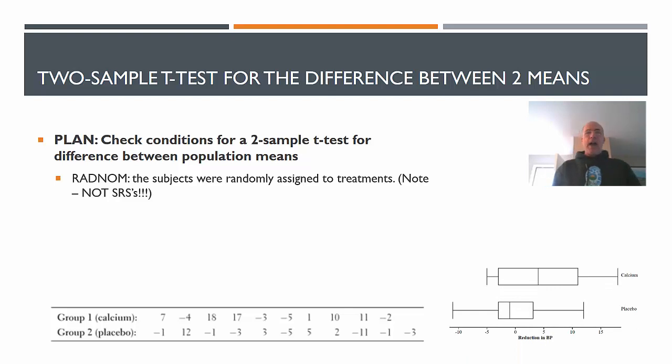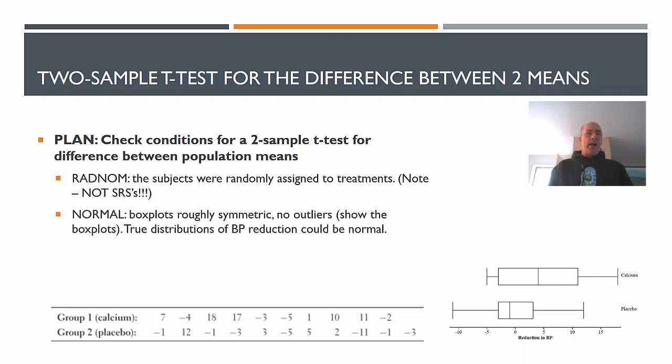Normality condition - you'll notice here I've made some box plots. We have to talk about both box plots. Both box plots are roughly symmetric, have no outliers, and make sure you draw those box plots. You don't even need a number line. You can just draw a rough sketch of both box plots. And the two distributions of blood pressure reduction could be thought of as approximately normal here. It's safe to assume that.